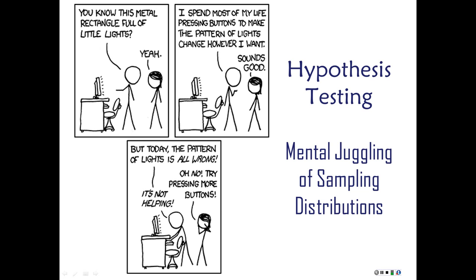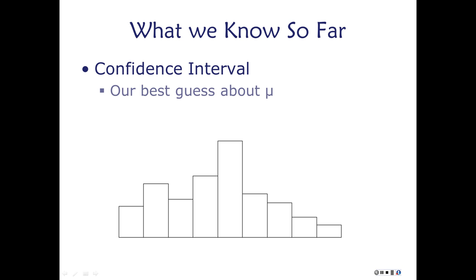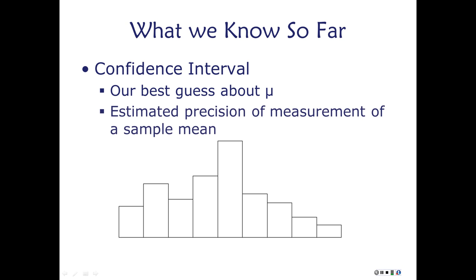We're prepared for hypothesis testing because we know what a sampling distribution is. We also know what a confidence interval is. A confidence interval is our best guess about where the population mean is. Our sample mean — our point estimate — is our best guess, but a confidence interval tells us how much confidence we can have in that guess.